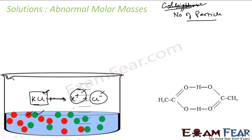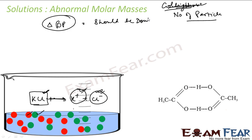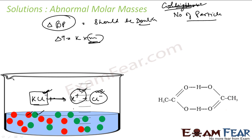Now in the case of ionic compounds, the moment you put them in aqueous solution — and we do this a lot because water is the universal solvent — the number of particles doubles. Since colligative properties depend only on the number of particles, the expected increase in boiling point should be double. Because delta Tb = Kb × m, and this is proportional to the number of particles. In an ionic aqueous solution, the number of particles is double, so the change in temperature should also be double.